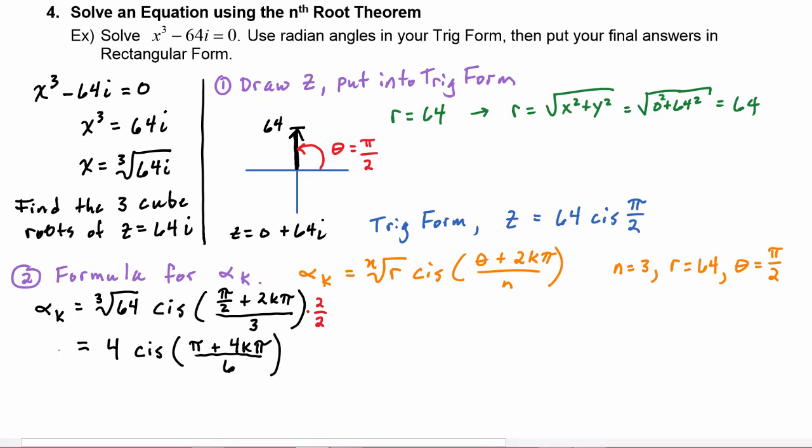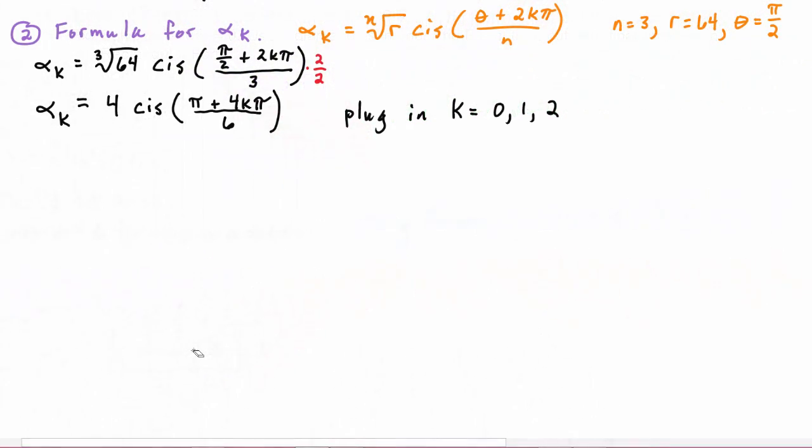And this is going to be our α_k and we know that we will plug in k = 0, 1, and 2, since n = 3 we have to stop at n - 1, which is 2. Now that we have our formula for α_k, the third step is to use that formula to calculate the α_k's.